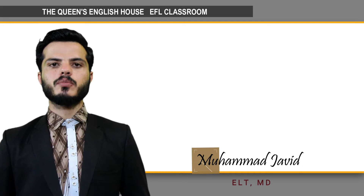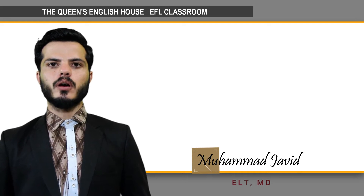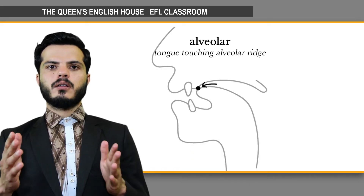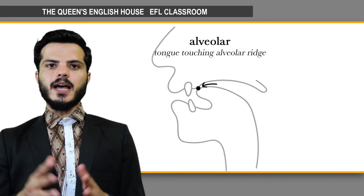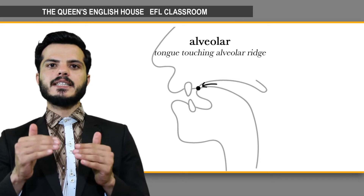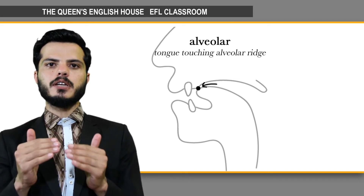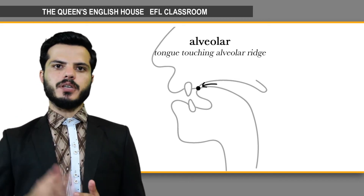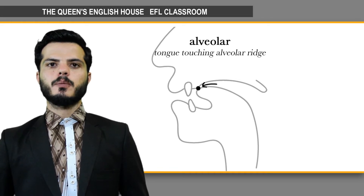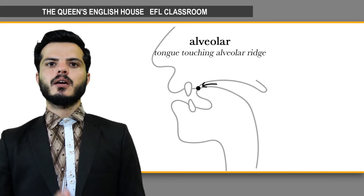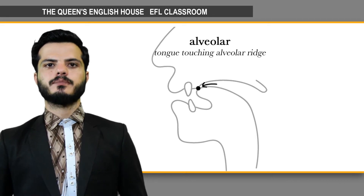In this video I'm going to teach you alveolar sounds. Alveolar sounds are the sounds which are produced at the alveolar ridges right behind the top teeth. So the place of articulation for these sounds is the alveolar ridges.